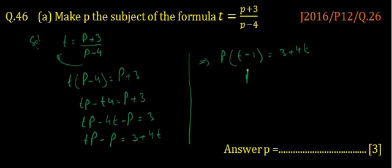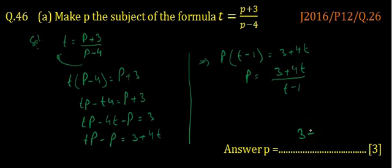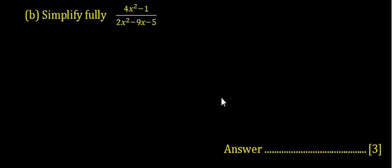We have to make p the subject of the formula, so it becomes p equals 3 plus 4t divided by t minus 1. The answer for part a is p equals 3 plus 4t upon t minus 1.